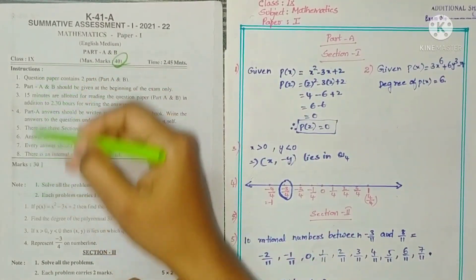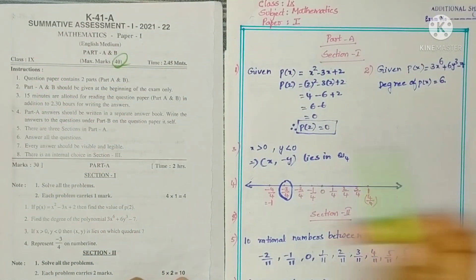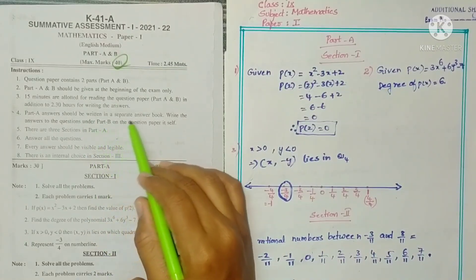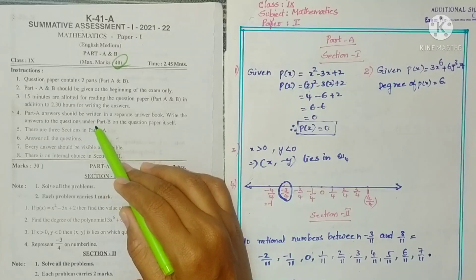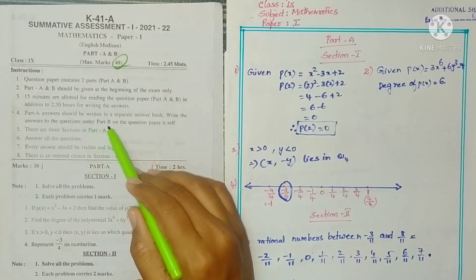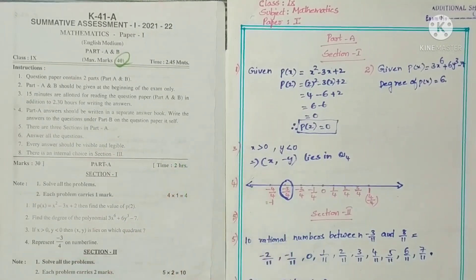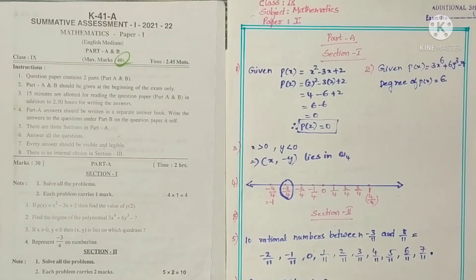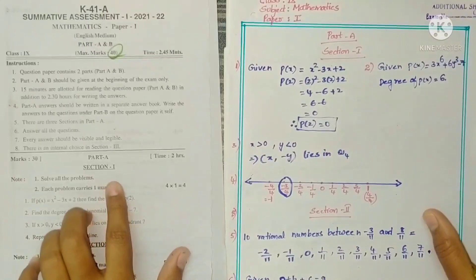Before writing the exam, read carefully. Part A answers should be written on your separate answer book. Write the answers to questions under Part B on the question paper itself. So for Part B, you have to write the answers on the bit paper only.